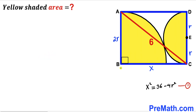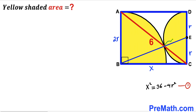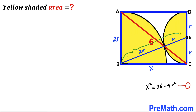In the next step I'm going to connect center B with center E. Let's recall a crucial fact: the centers and the point of tangency are collinear. So centers B, E, and the point of tangency all lie on the same line. We can see that the radius from E to the tangent point is lowercase r, and the radius of the quarter circle from B to the tangent point is 2r. Therefore, the full length BE equals r + 2r = 3r.